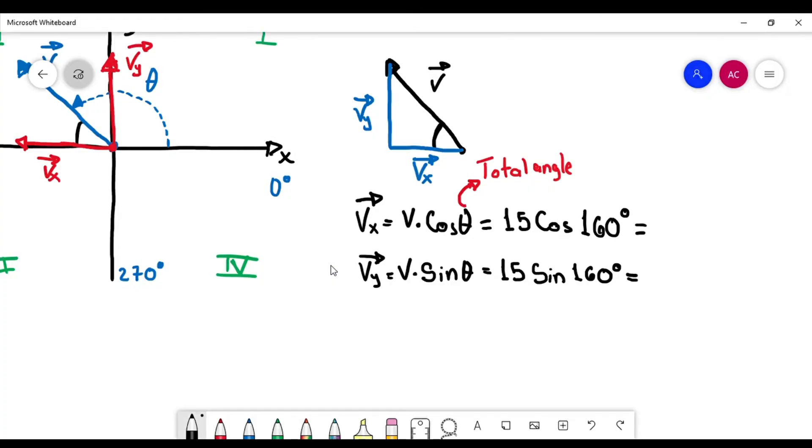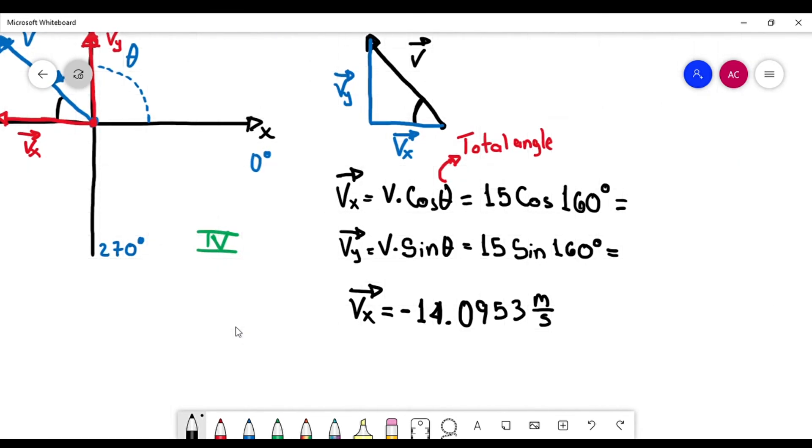Okay, let's write the answers that we got. So the x component equals minus 14.0953 meters per second. Remember that the components are going to have the same units as the vector. And then Vy equals 5.1303 meters per second. Okay, and those are the answers.